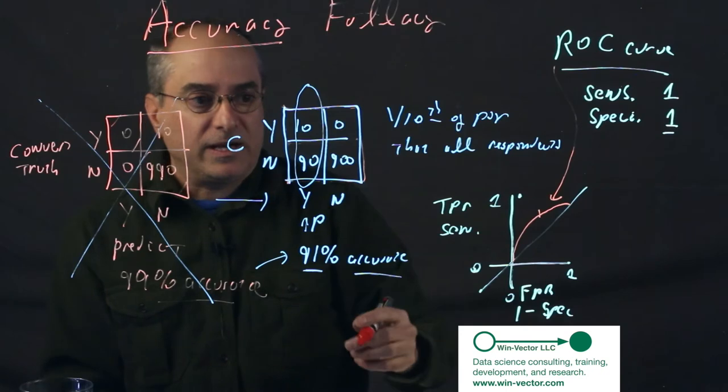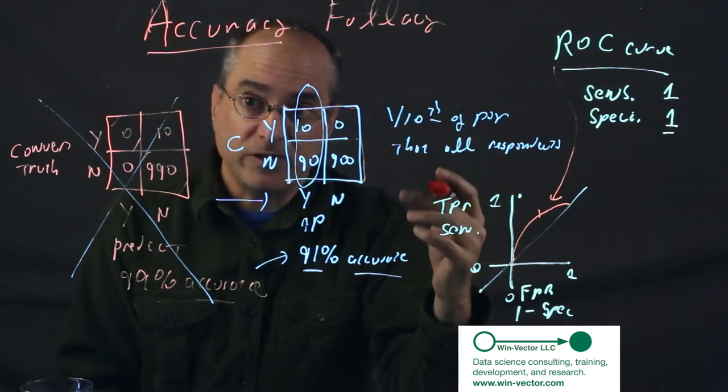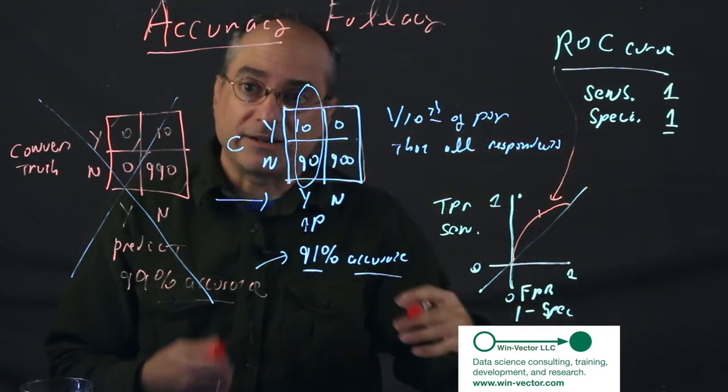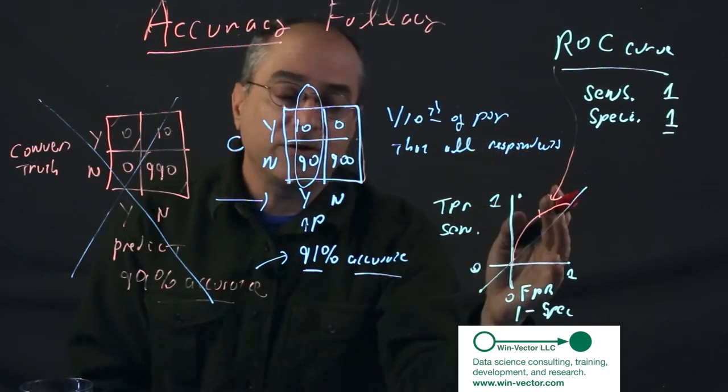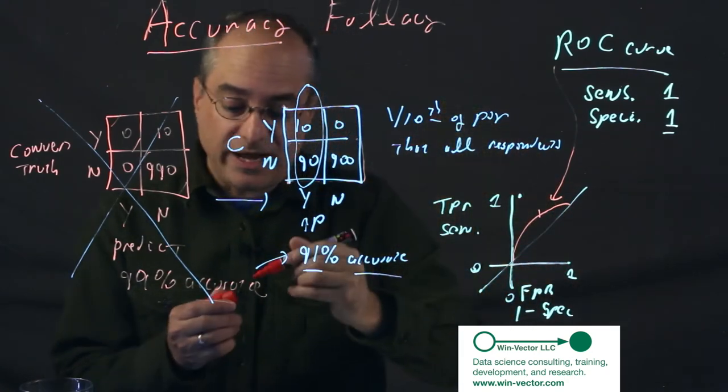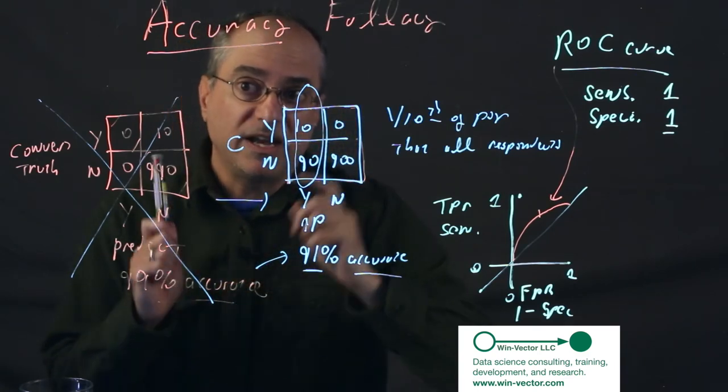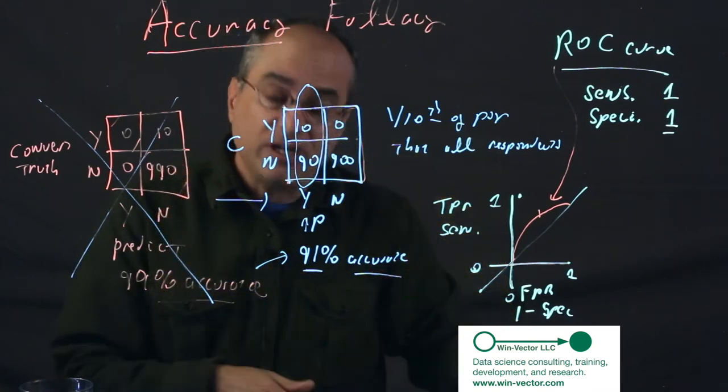Now, how do we change a model score into a decision procedure? Well, we just say if the score is above this, we think this is our best prospect. And that above this is called a threshold. And we can get different behaviors by doing different thresholds. And this is why, operationally, you always want a model that returns a score, not a decision. You want to reserve converting a score into a decision into your business logic.